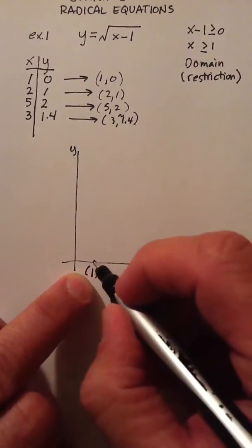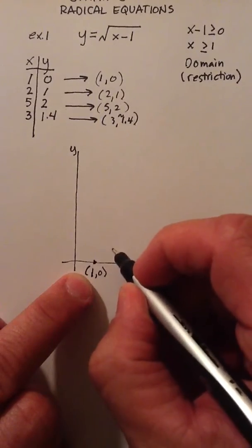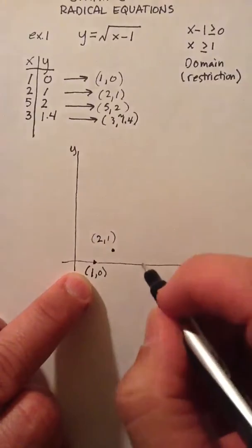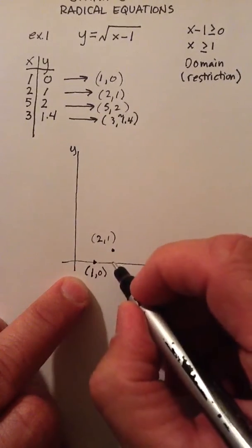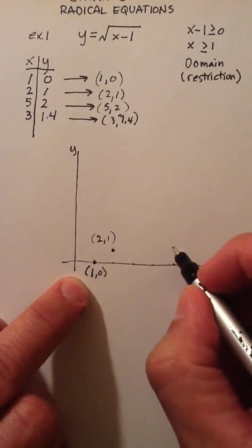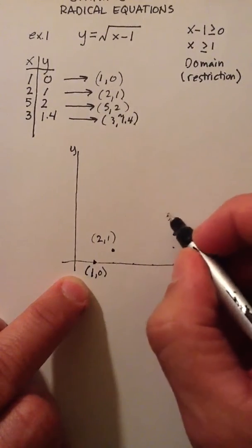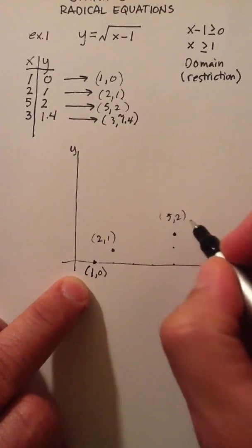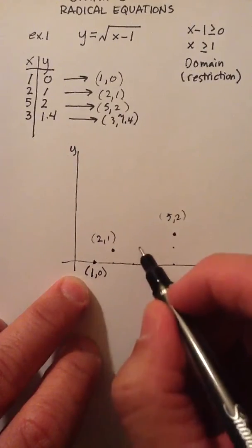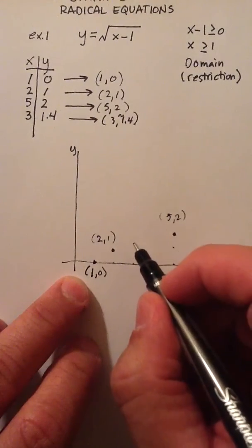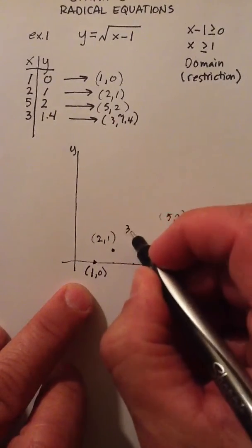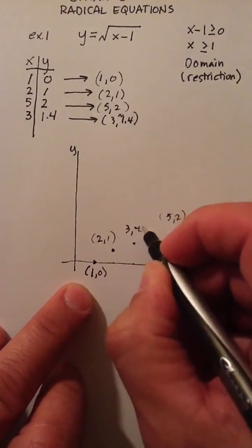Now, I want 2. So, 1. Let's just say that's about 2. Up 1. That's right there. So, there's 2, 1. I've got 5, 1, 2, 3, 4, 5, up 2, 1, 2, so that's 5, 2, and then finally 3, and about a 1.4. So, 1, 2, 3, 1, about a 0.4 is right about there. And that's 3, approximately 1.4.